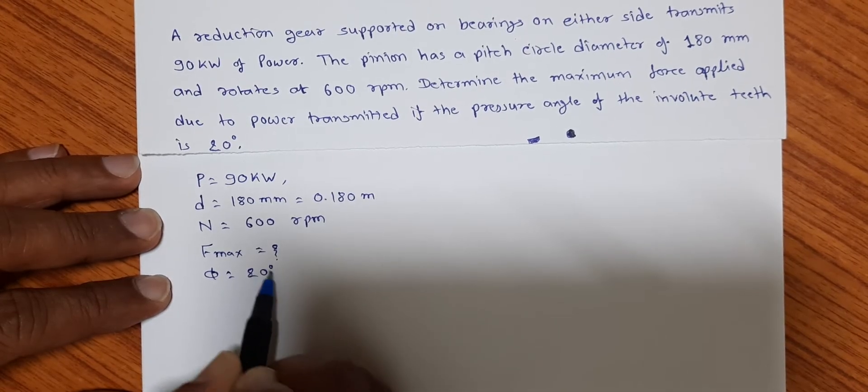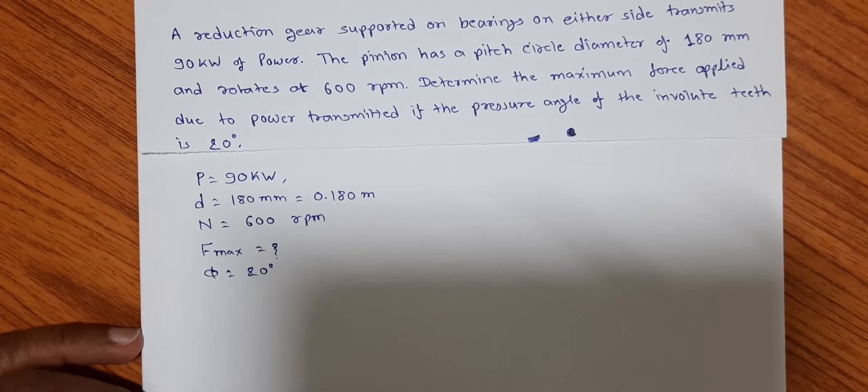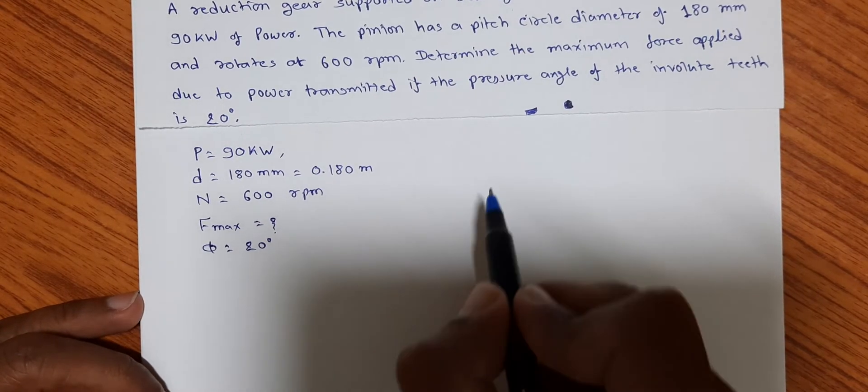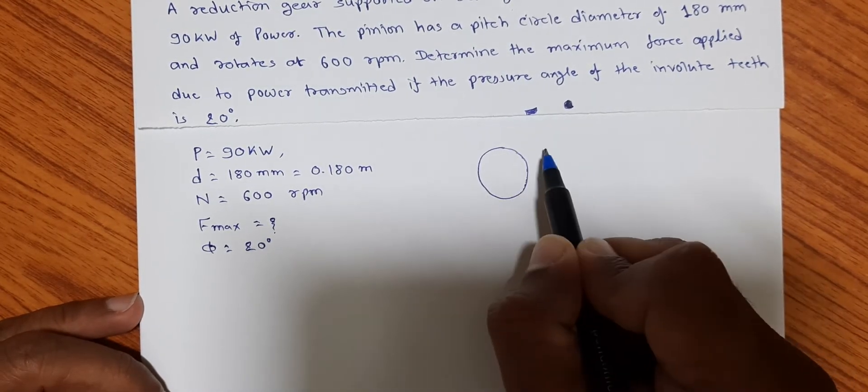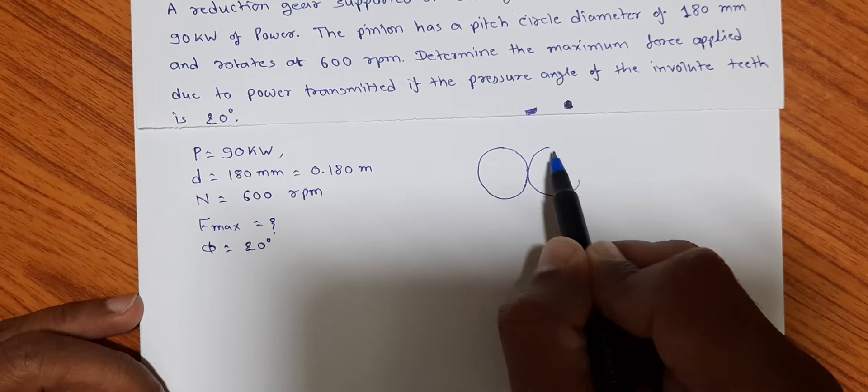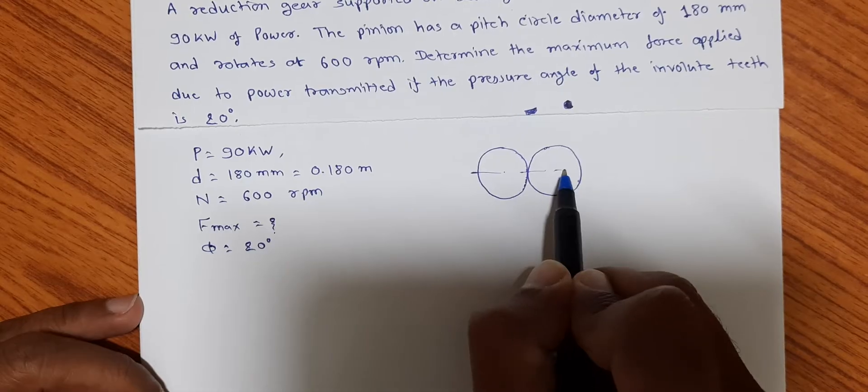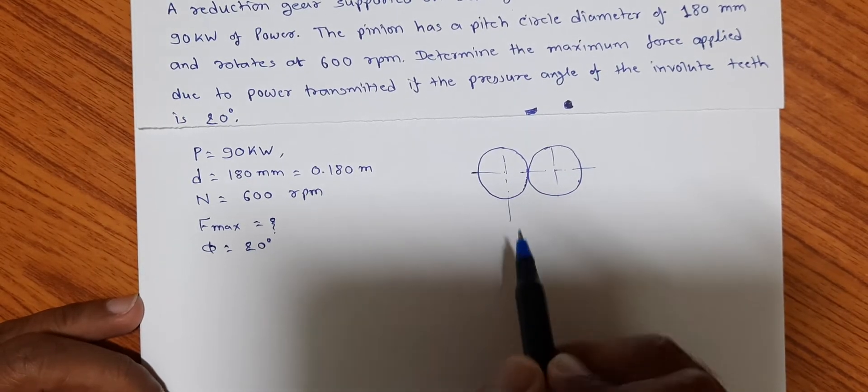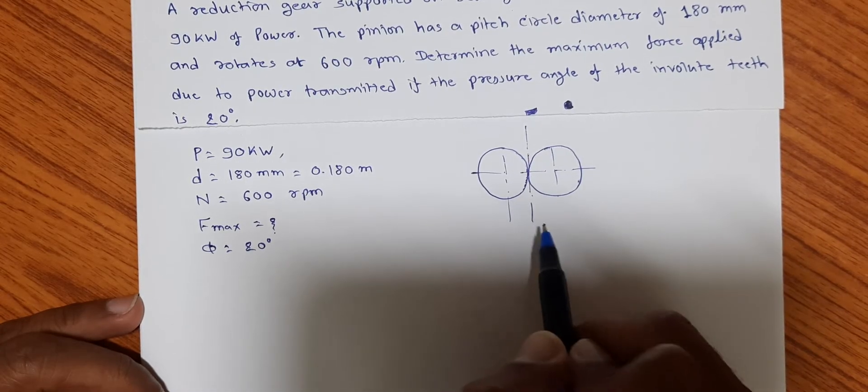That is phi equal to 20 degrees. So here let us understand the given data with the help of a diagram. These are the matching gears, these are the centers of rotation, and this is a common tangent.